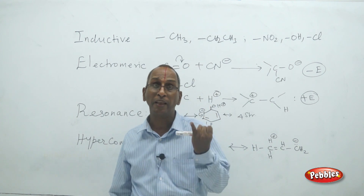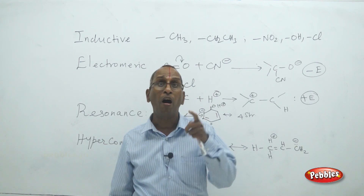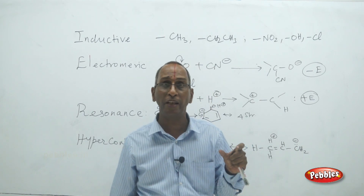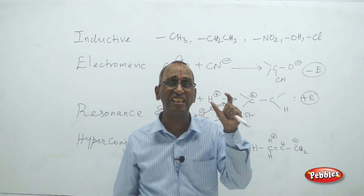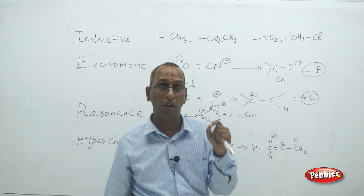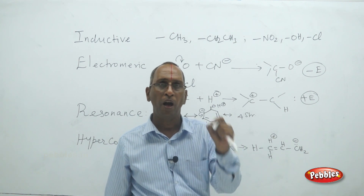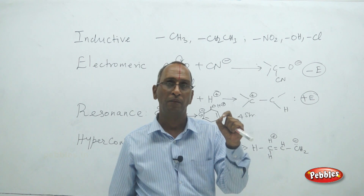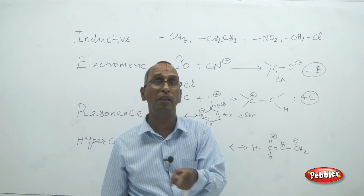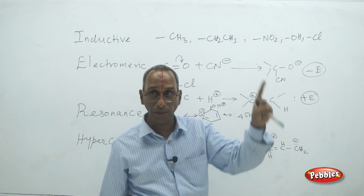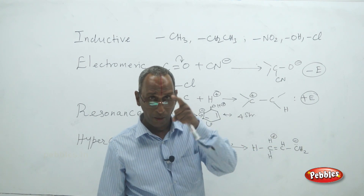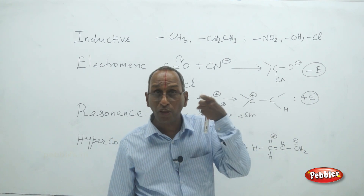Radicals, cations, and anions are all transient intermediates — they exist only for a short while. Radicals are reactive; for example, a hydrogen radical combines with another hydrogen radical to form a hydrogen molecule, and an oxygen radical reacts with another oxygen radical to form an oxygen molecule.